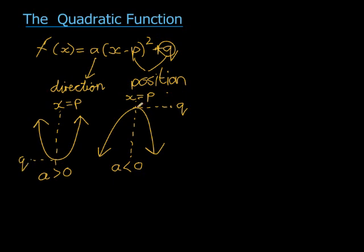The coordinate of that point where it turns — that's called the turning point. The coordinate of that turning point is the point (p, q).